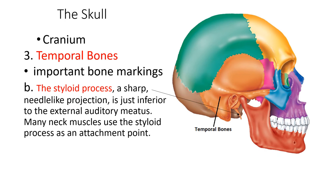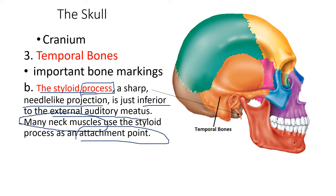Another marking is the styloid process. In bones, the term 'process' is used for extensions and protrusions. You can see that this one protrudes from the temporal bone. The styloid process is like a needle — a sharp needle projection just inferior to the external acoustic meatus. Many neck muscles use the styloid process as an attachment point, allowing us to move our head and neck.